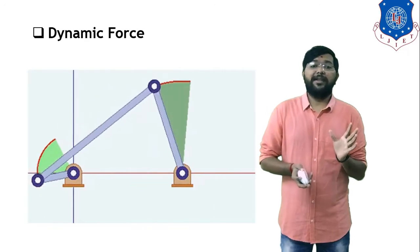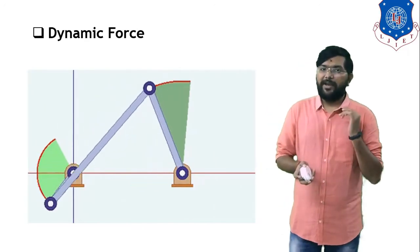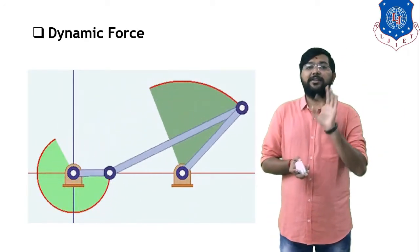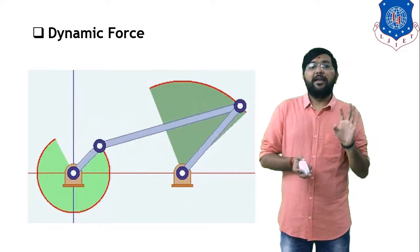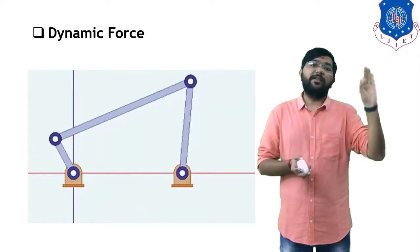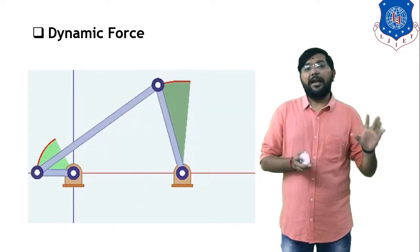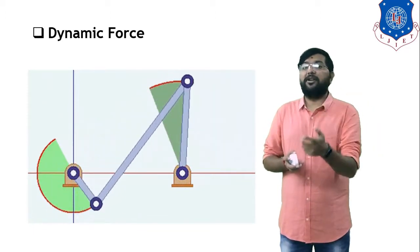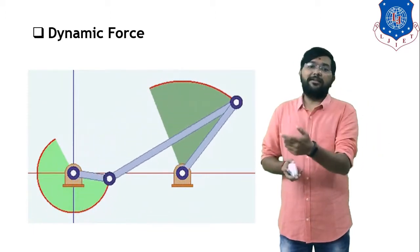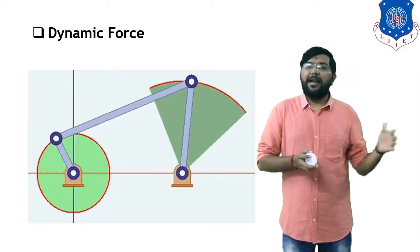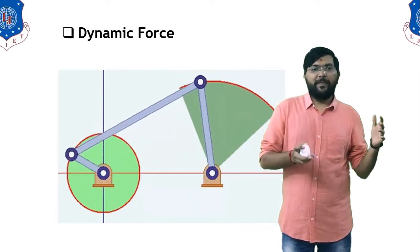Another example of Dynamic Force is the 4-bar mechanism, which has 4 links. If you apply force, the body tries to come into motion — it gets some displacement, some velocity, some acceleration. This type of force is considered Dynamic Force.